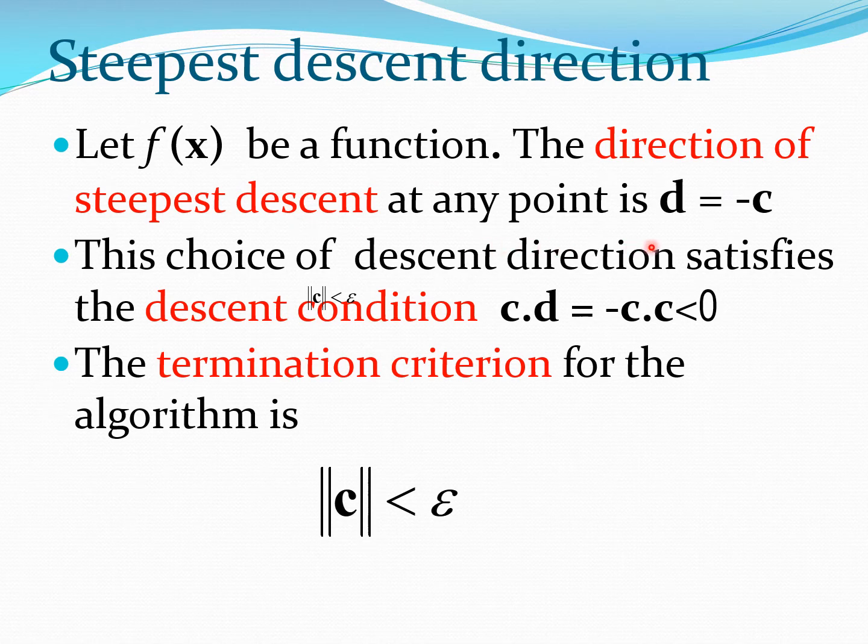of steepest descent at any point is d equals negative c. This we have seen from our previous lecture is the direction of steepest descent, or the direction in which the function will decrease to the maximum possible extent.